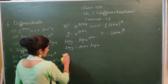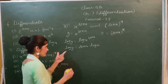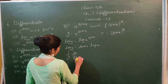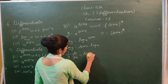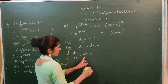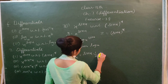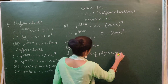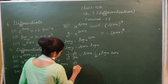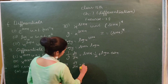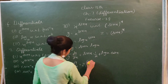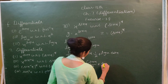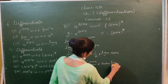Differentiating log y with respect to x, we get (1/y)(dy/dx). Applying the product rule: sin x as it is times (1/x) plus log x as it is times cos x. Therefore dy/dx = y times (sin x / x + cos x log x).